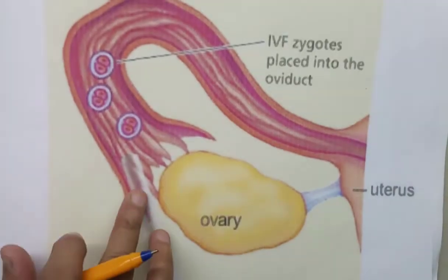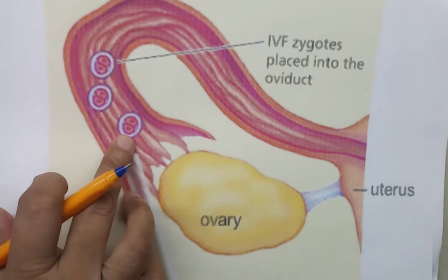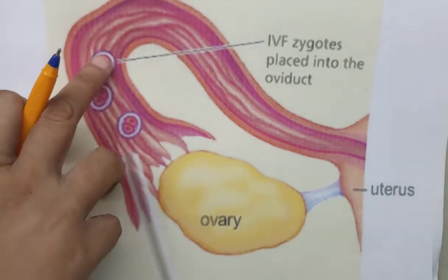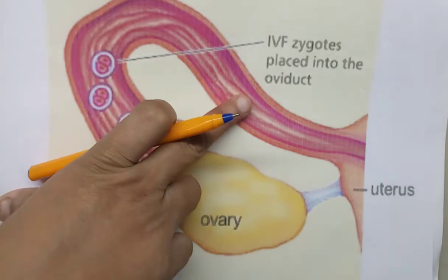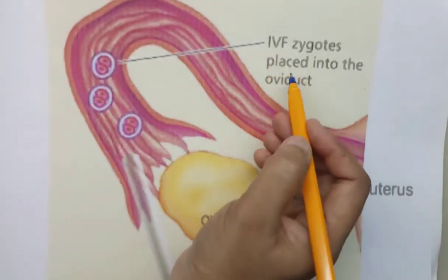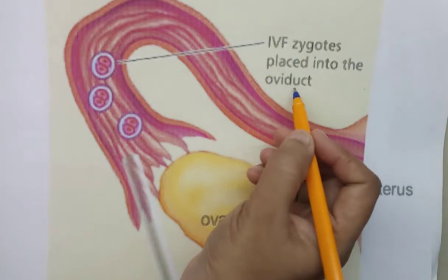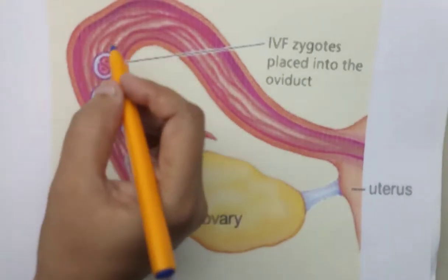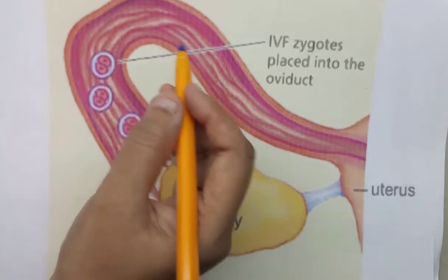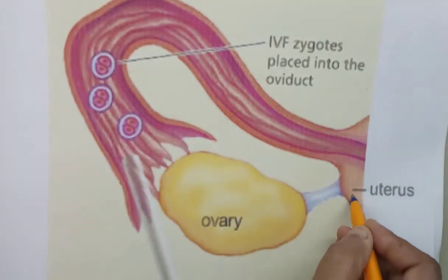Looking at this picture, the blastomere — that is the zygote — is transferred into the fallopian tube, also called the oviduct. The IVF zygote is placed into the oviduct, and after certain development, it will move towards the uterus for implantation.